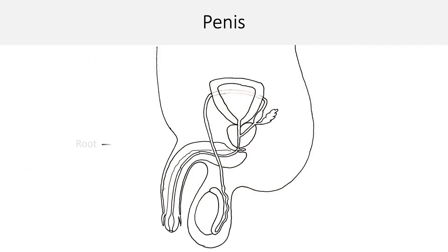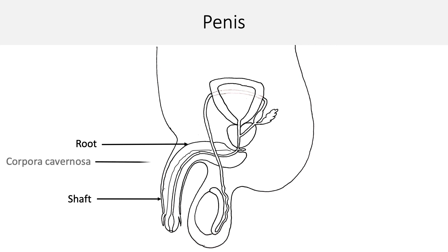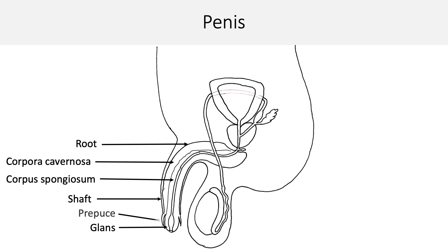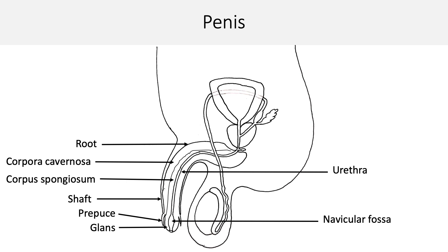Penis has a root in the perineum and a shaft or the body which is part of the external genitalia region. Penis is made up of three erectile columns: a pair of corpora cavernosa dorsally and a corpus spongiosum ventrally. At the distal end of the shaft, the corpus spongiosum is enlarged to form the glans, which is covered by a retractable fold of foreskin called the prepuce. Corpus spongiosum is traversed by the urethra, which is transverse slit-like in the penis but becomes wider in the glans at the navicular fossa.